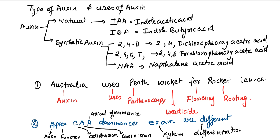We have to remember two different statements. Australia uses Perth wicked for rocket launch. Auxin uses parthenocarpy, weedicide, flowering, rooting. Then function, you should remember cell division, abscission, apical dominance, xylem, differentiation.